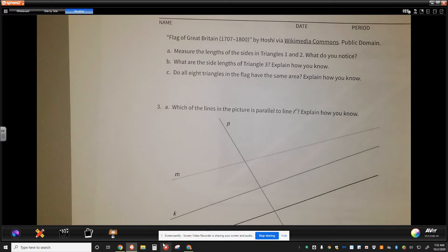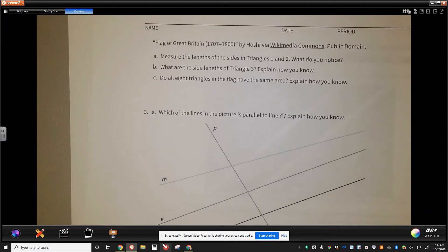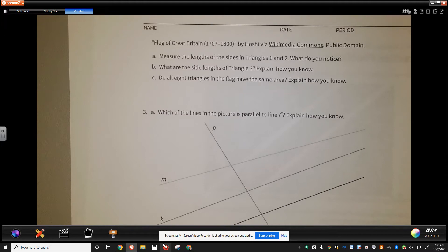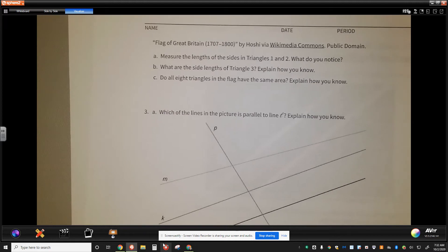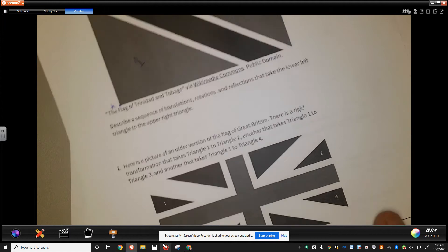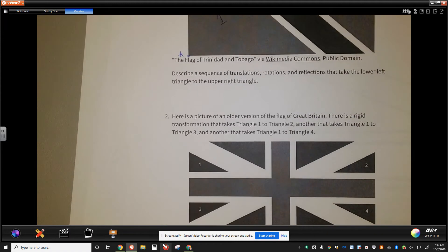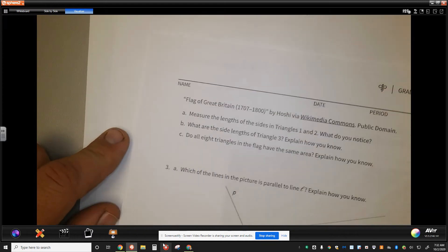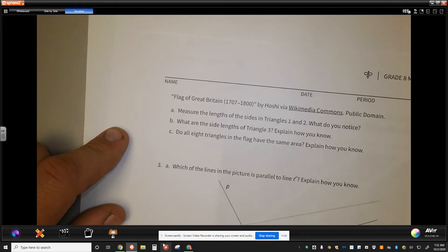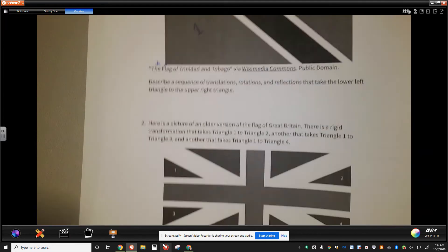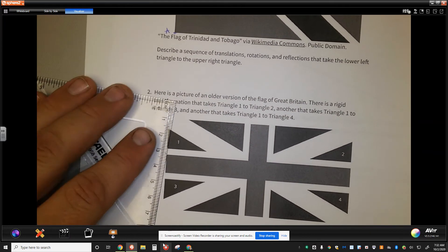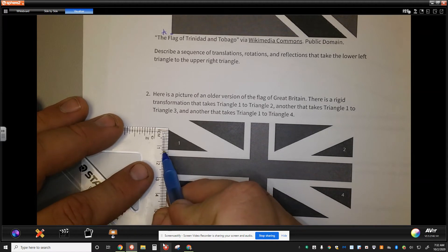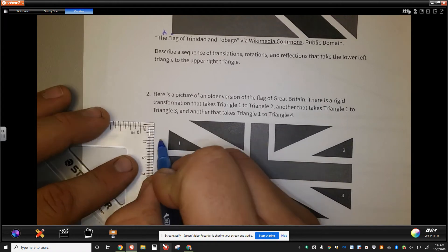The questions for this come in right here. Measure the lengths of triangle 1 and triangle 2, and what do you notice? What are the side lengths of triangle 3? Explain how you know. And do all 8 triangles in the flag have the same area? When we look at these pieces and start thinking about those questions, the side lengths of triangle 1 and triangle 2, let's go ahead and look at that. The lengths over here, we have the first side right here, appears to be 1.2 centimeters.